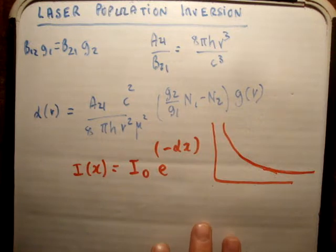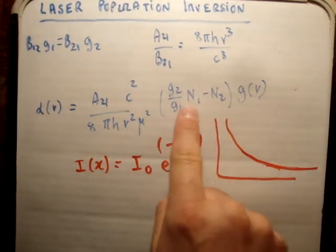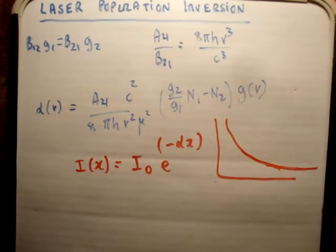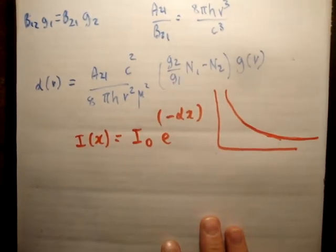So, the thing is, if you look here, this expression here, g2 over g1, n1 minus n2, kind of relates to the population. So, n1 and n2 are the population densities in each of the levels.